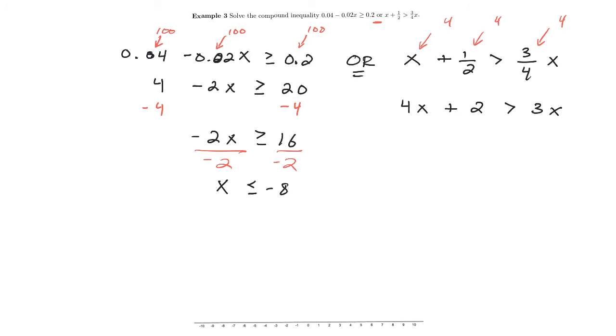Maybe now I'll subtract 3x, but I'll also subtract 2. This gives me x is greater than negative 2. And I'll write it again, but that's x less than or equal to negative 8, or x greater than negative 2. So on a number line,